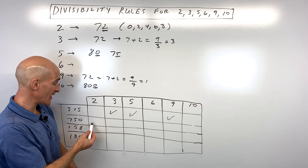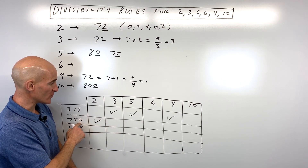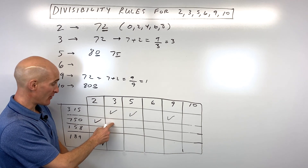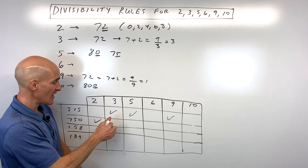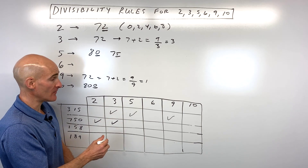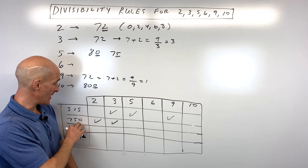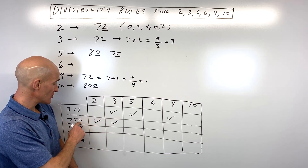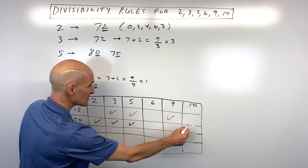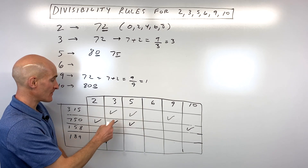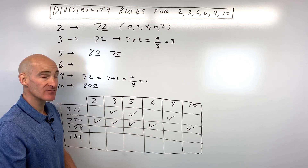750. Is it divisible by 2? Yes, because it ends in an even digit — 0. Is it divisible by 3? Well, 7 plus 5 is 12, plus 0 is 12. Is 12 divisible by 3? Yes, so the number is divisible by 3. Is 12 divisible by 9? No, so 750 is not divisible by 9. Does it end in a 0 or a 5? Yes, so it's divisible by 5. It ends in a 0, so it's also divisible by 10. Is it divisible by 6? It is divisible by both 2 and 3, so the number is divisible by 6.